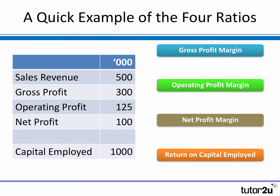Let's have a quick look at an example to see how the numbers are put together. On the left is a simple summary of information from the income statement and the balance sheet. We've got some sales revenue; take away cost of sales and that gets us to the gross profit of £300,000. Take away the overheads and we get to operating profit of £125,000. There's another £25,000 of costs — possibly finance or interest costs — giving us a net profit of £100,000. Gross profit margin is therefore 300 divided by 500, multiplied by 100, which gives us 60%.